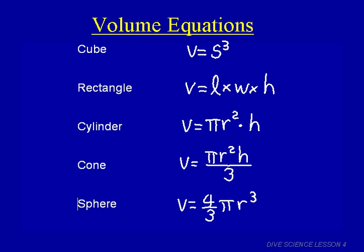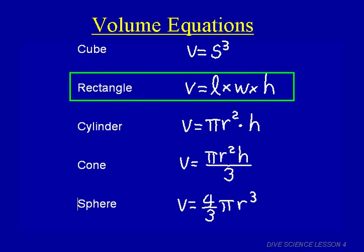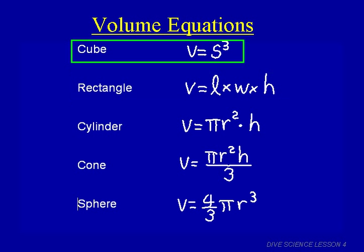Volume is a measurement of how much space an object takes up. Here are some formulas for calculating volume — for a cube, rectangle, cylinder, cone, and sphere. For a rectangle, assuming all sides are right angles, you just take length times width times height. Cubes are like rectangles where all sides are the same length, so you say S times S times S, or S cubed.